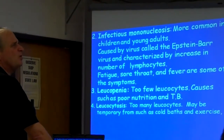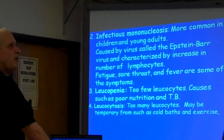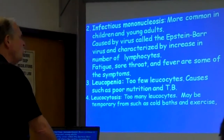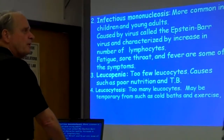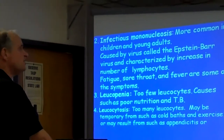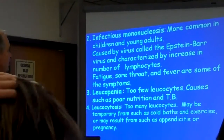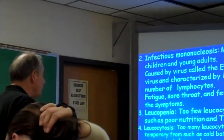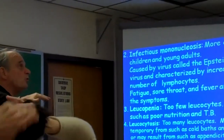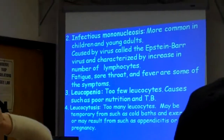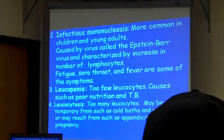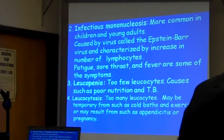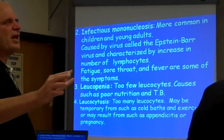Leukocytosis may be temporary — exercise might cause a little bit of it, not unhealthy. Leukocytosis is an elevation of white blood cells. It may be temporary from things such as cold baths, swimming, or exercise. It may also result from appendicitis — that's not too good — or pregnancy. So you might have leukocytosis if you were pregnant. Do remember these terms: leukopenia means too few, leukocytosis means too many. Mononucleosis is characterized by an increase in the number of lymphocytes. And leukemias — chronic would be ongoing, acute would be sudden onset.